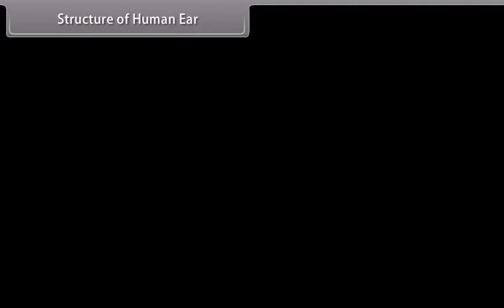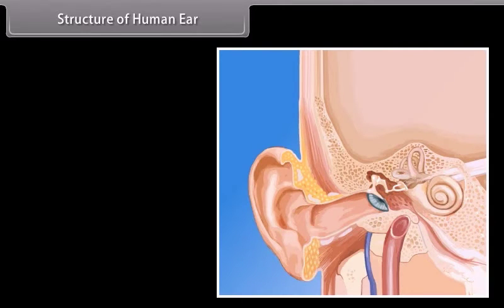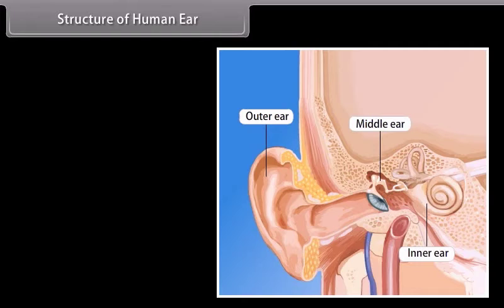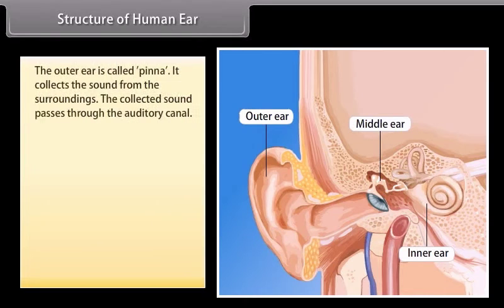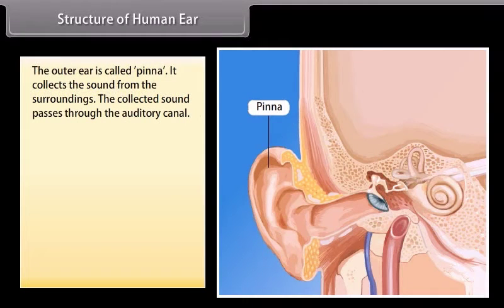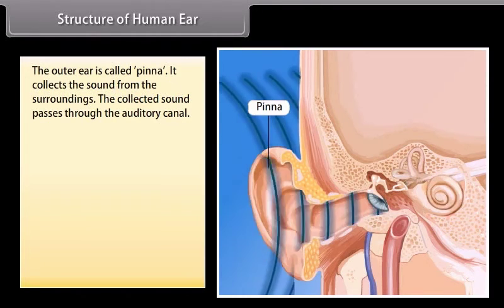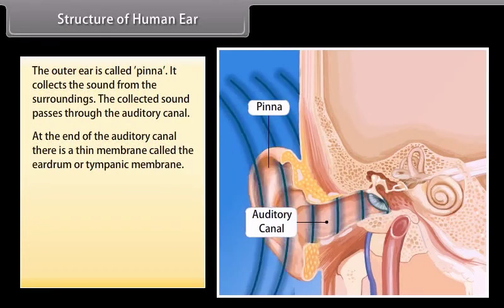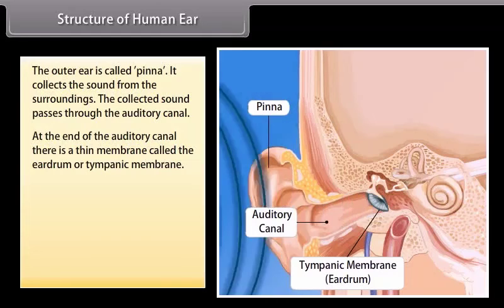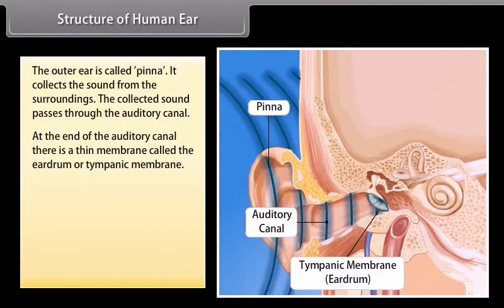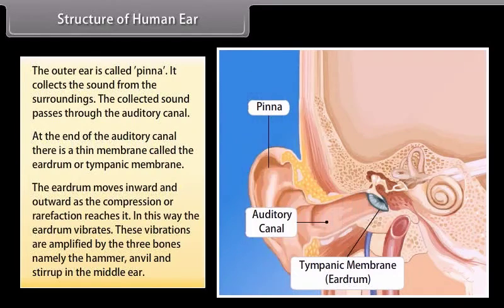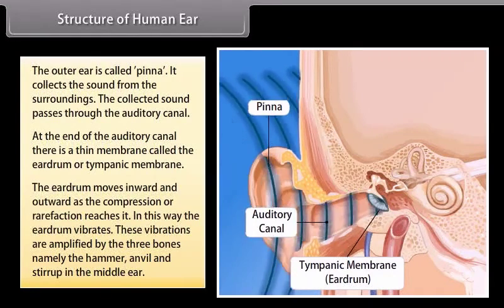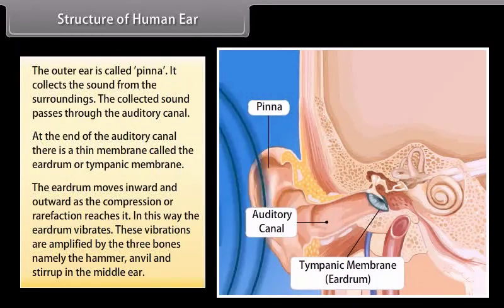Structure of the human ear. The ear consists of three basic parts: the outer ear, the middle ear and the inner ear. Each part of the ear has a specific role in the task of detecting and interpreting sound. The outer ear is called pinna. It collects the sound from the surroundings. The collected sound passes through the auditory canal. At the end of the auditory canal, there is a thin membrane called the eardrum or tympanic membrane. The eardrum moves inward and outward as the compression or rarefaction reaches it. In this way, the eardrum vibrates.